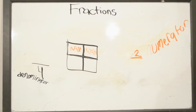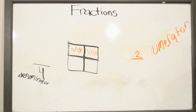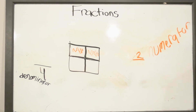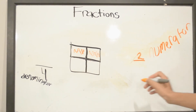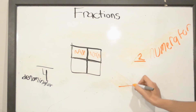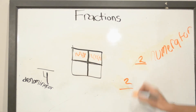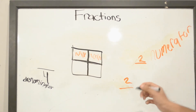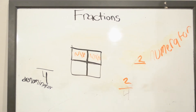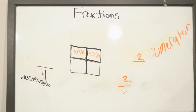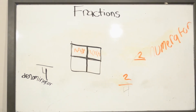So when we write a fraction, our fraction would look like this: 2 over 4. And this is how we write a fraction.